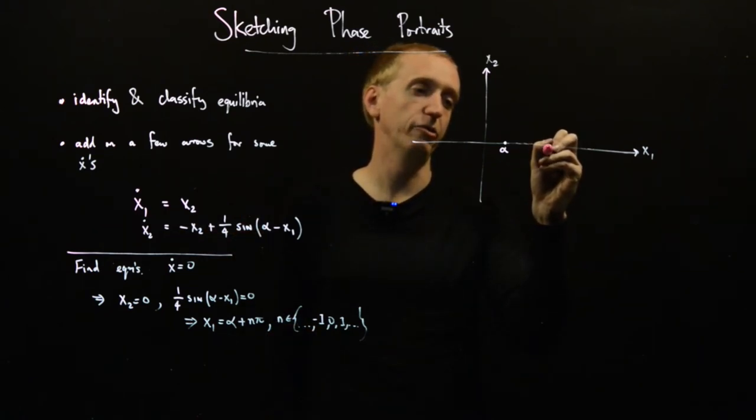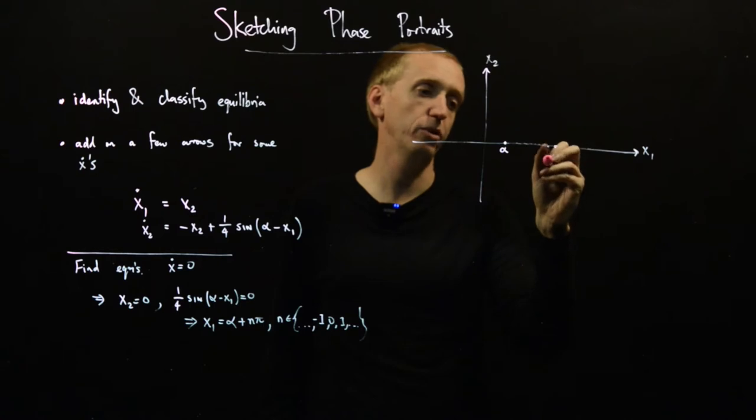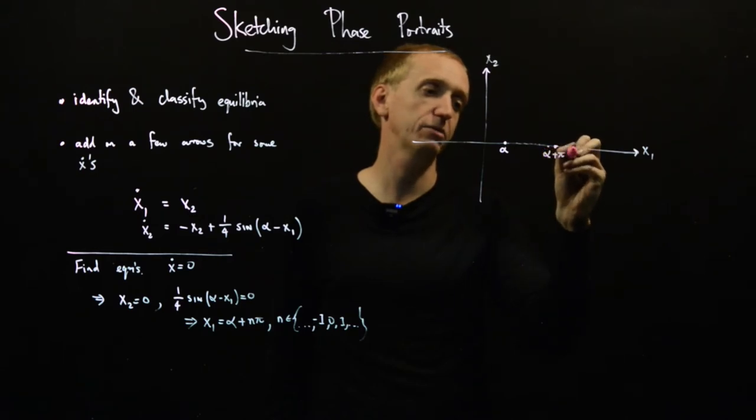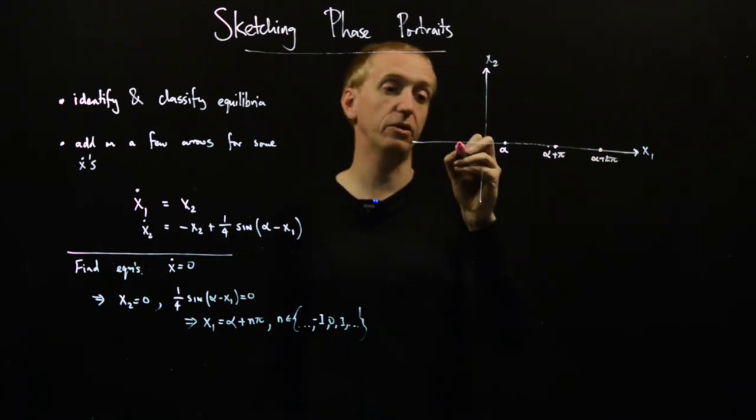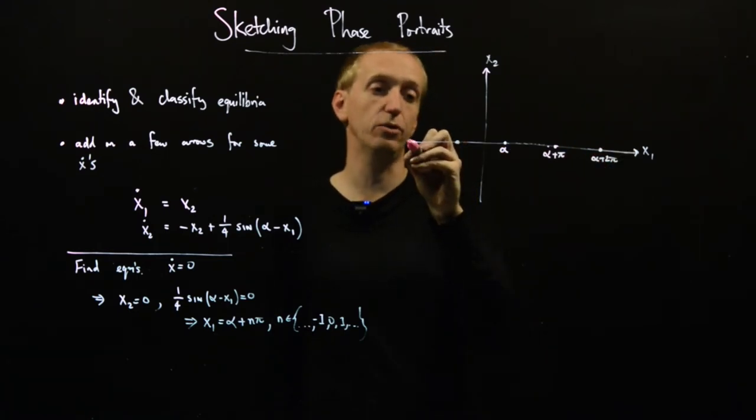And so we would actually also have an equilibrium point here, so alpha plus pi, and here we've got alpha plus 2 pi, and so on. And we have the same going in the other direction. So we've got all of these equilibrium points.